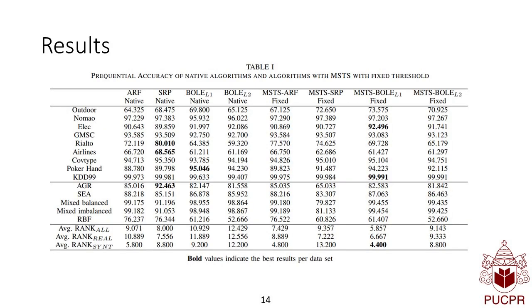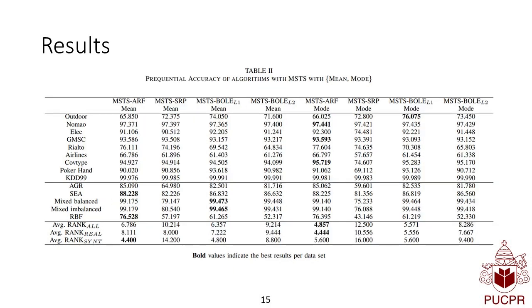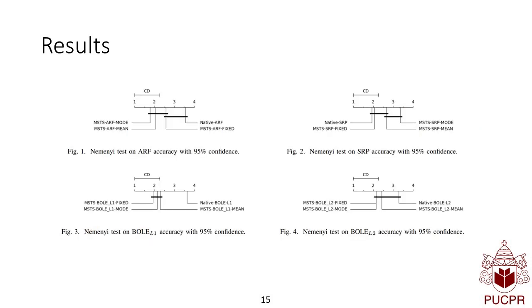Those are the results. The tables are not so easy to see if they were helpful at all. Then we performed a Nemenyi-Friedman test to see the differences in ranking and how are the critical differences between them.